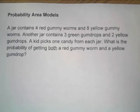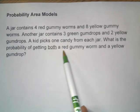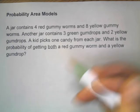This is an intro into probability area models. A jar contains four red gummy worms and eight yellow gummy worms. Another jar contains three green gumdrops and two yellow gumdrops. A kid picks one candy from each jar. What is the probability of getting both a red gummy worm and a yellow gumdrop?